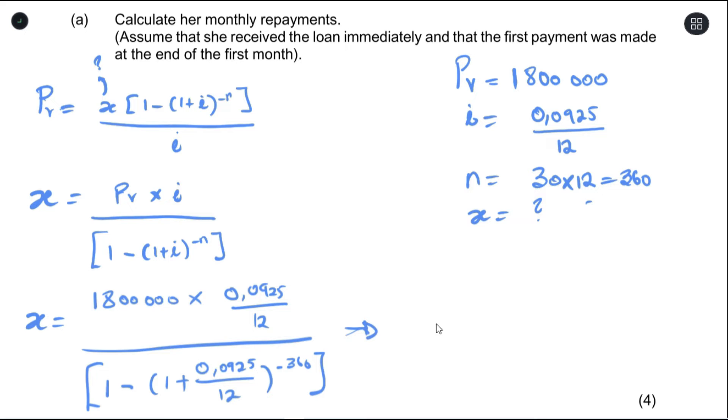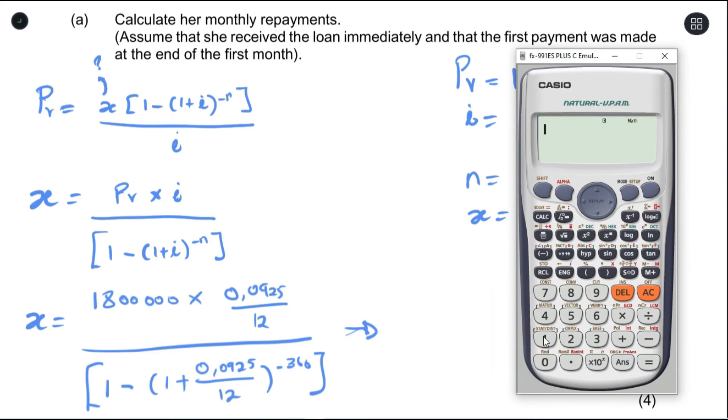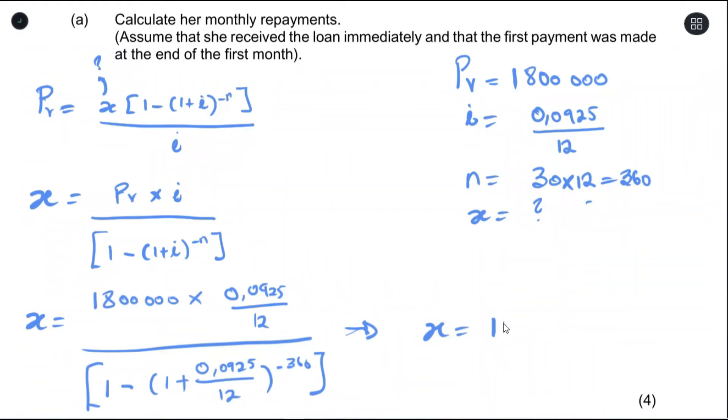So we can put all this in the calculator. So the answer would be 14,808.16.